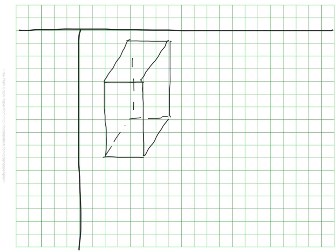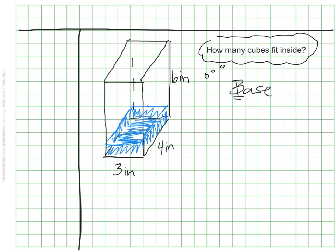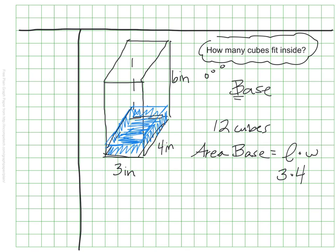I'm going to start with our friendly rectangular prism. To find the volume, I'm essentially figuring out how many cubes can fit inside this object. I'll think about the layers of cubes I could put in here, and I need to look at the base of the figure. If I cover the entire bottom layer with cubes, I can fit 12 cubes along the bottom — I find that by calculating the area of the bottom, multiplying length times width: 3 times 4 equals 12.